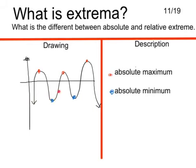The function shows us how the extreme value function looks like. This is the extreme value function and the absolute maximum is the red point — it goes up — and the absolute minimum is the blue point.